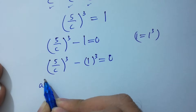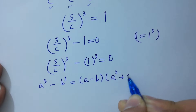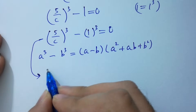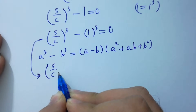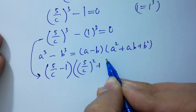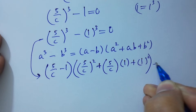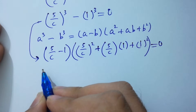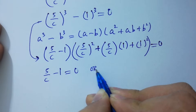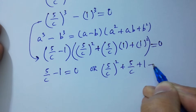As we know that a cubed minus b cubed equals a minus b times a squared plus ab plus b squared. So we have 5 over c minus 1 times 5 over c squared plus 5 over c times 1 plus 1 squared equals 0. Either 5 over c minus 1 equals 0, or 5 over c squared plus 5 over c plus 1 equals 0.